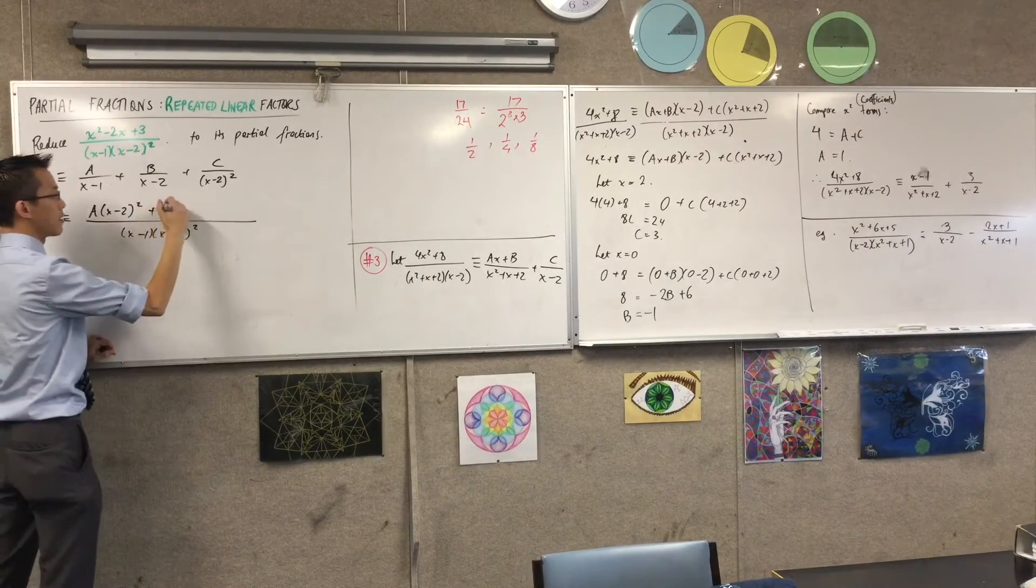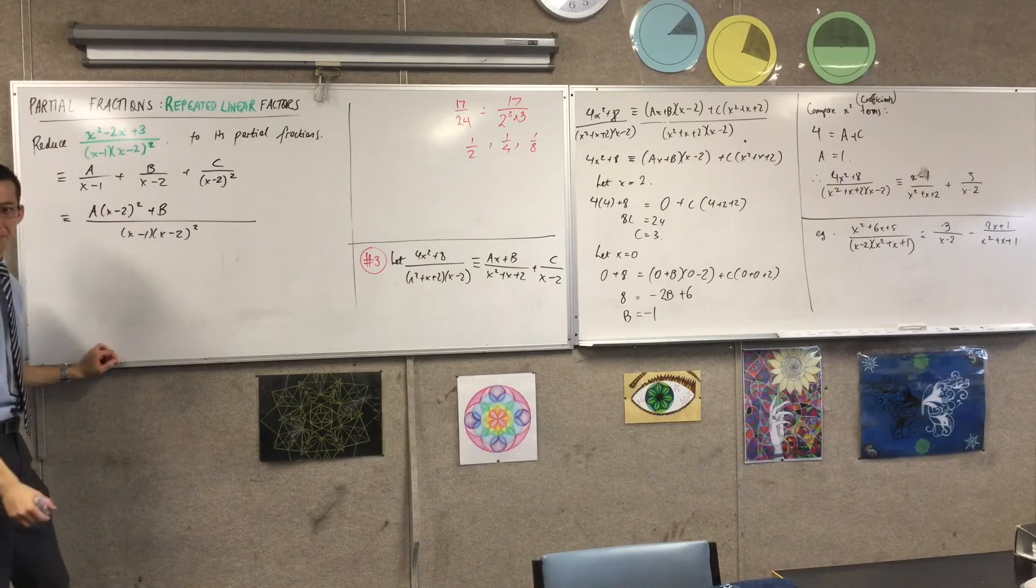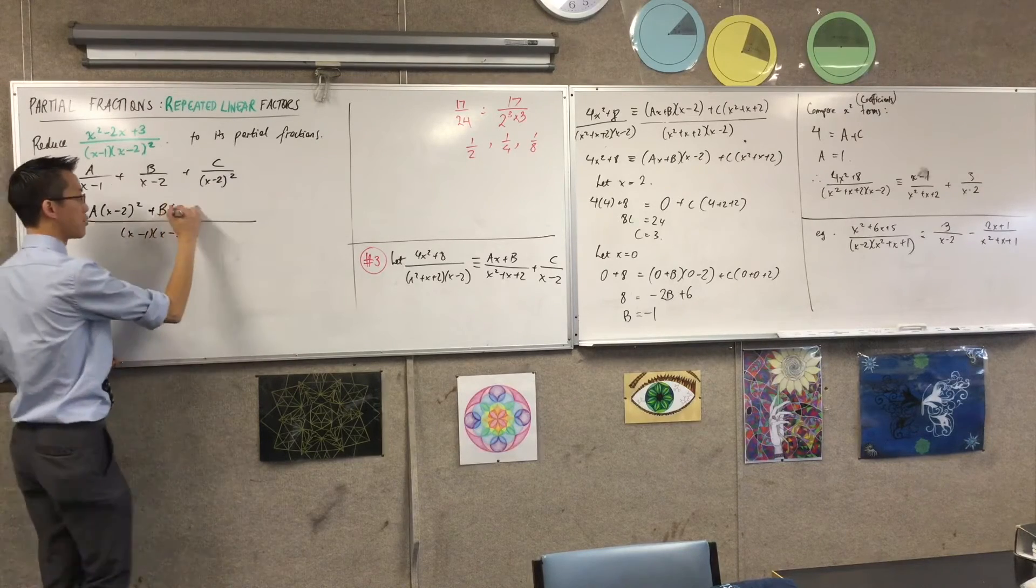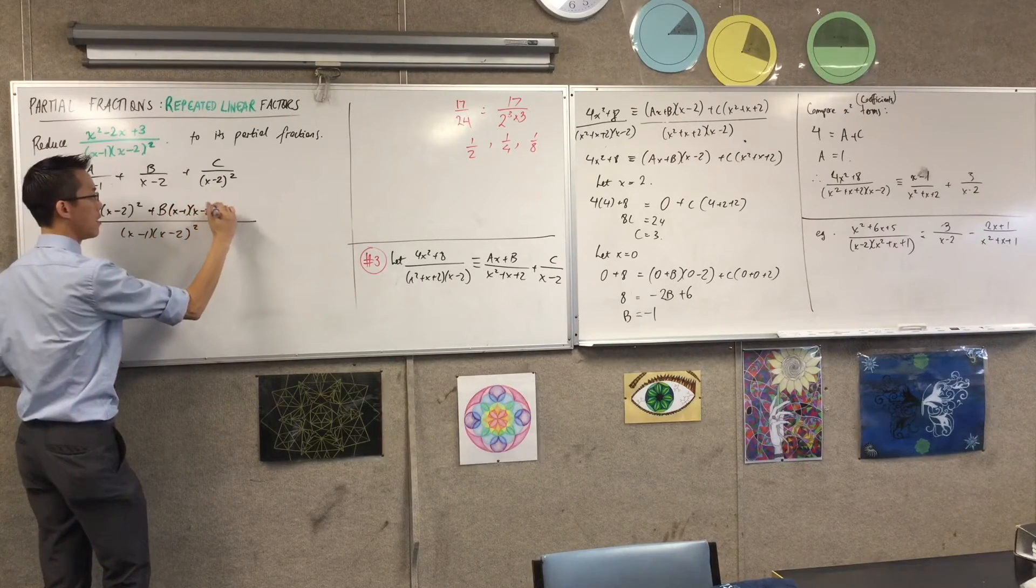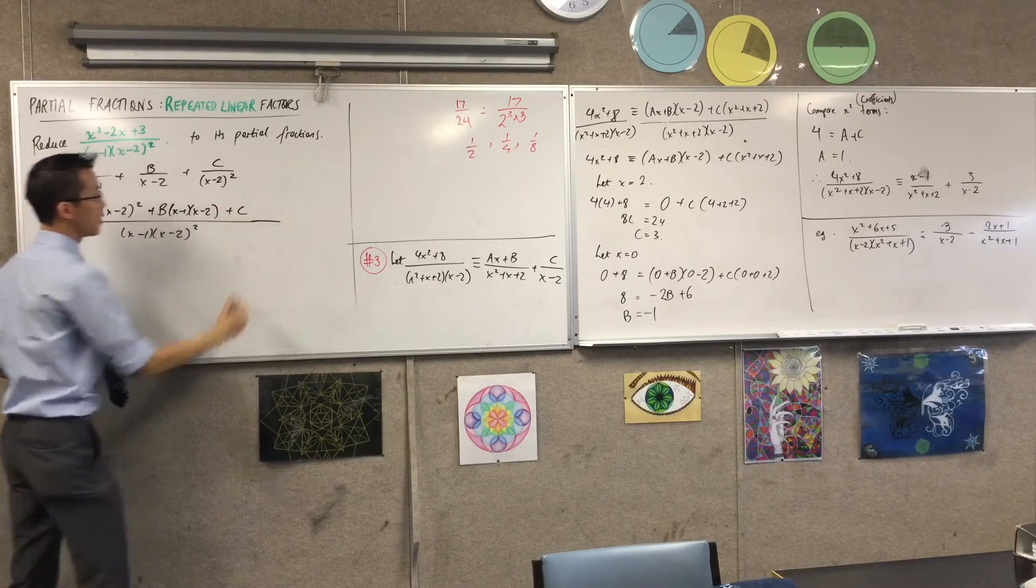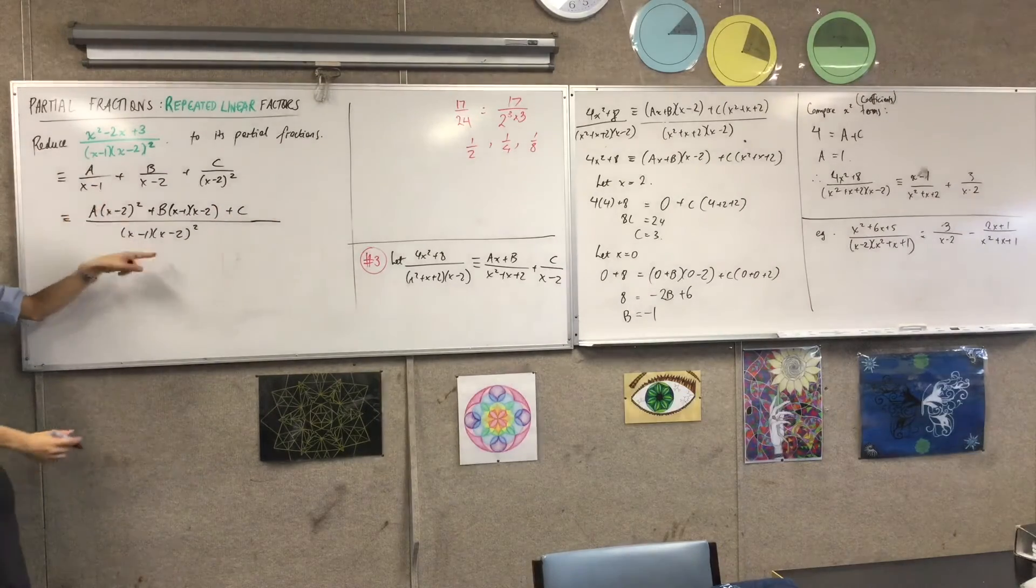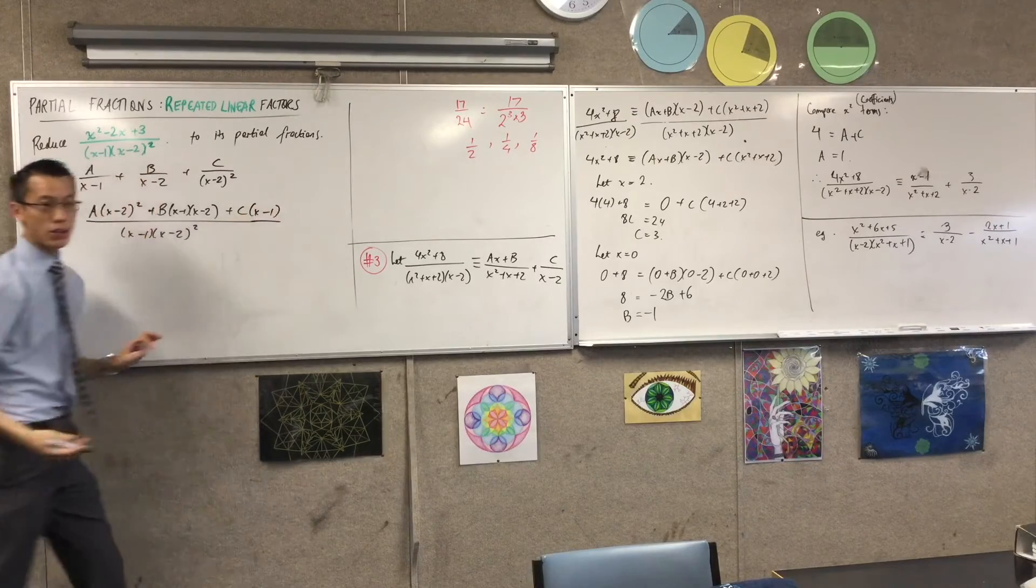What about b? How many of these terms am I going to get? x minus 1 and x minus 2 have to be added on. And then lastly, the c term, all I need is the x minus 1, and then everything will come out in the wash.